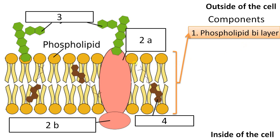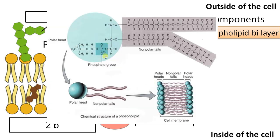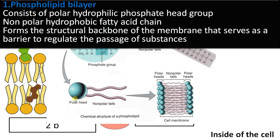What is it chemically? Let us zoom in this region. This is the head region and this is the tail region. The head region is made up of phosphate, therefore it is hydrophilic or water-loving, whereas the tail region is non-polar or hydrophobic. The phospholipid bilayer consists of a polar hydrophilic phosphatic head region and a non-polar hydrophobic fatty acid chain or tail region. It forms a structural backbone and serves as a barrier to regulate the passage of substances — the selective permeability of the membrane can be attributed to the phospholipid bilayer structure. The head groups are exposed to water as they are hydrophilic, and the non-polar tails or hydrophobic fatty acid chains are embedded inside, forming the interior of the membrane.